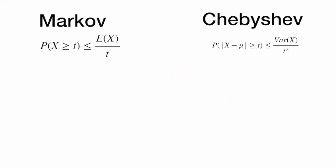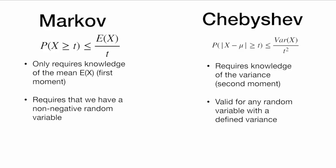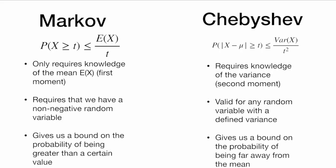Comparing Markov and Chebyshev's inequality: Markov's inequality only requires knowledge of the mean E[x], the first moment, whereas Chebyshev's inequality requires knowledge of the variance, the second moment, so we need a bit more knowledge about our random variable. Markov's inequality requires a non-negative random variable, whereas Chebyshev's inequality is valid for any random variable as long as it has a defined variance — so Chebyshev's is more widely applicable. Markov gives a bound on the probability of being greater than a certain value, while Chebyshev gives a bound on the probability of being far away from the mean.